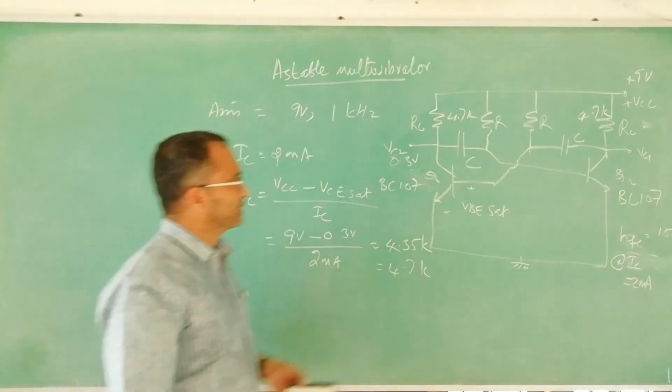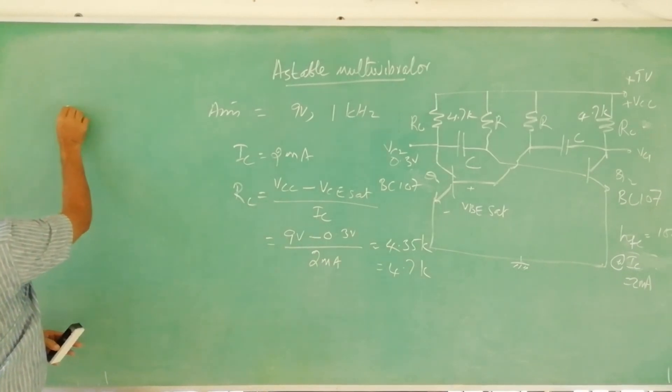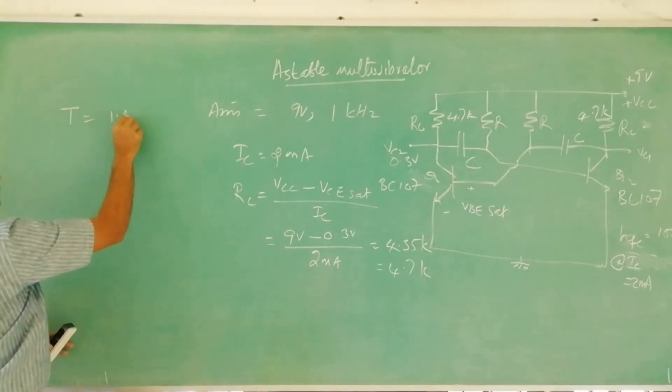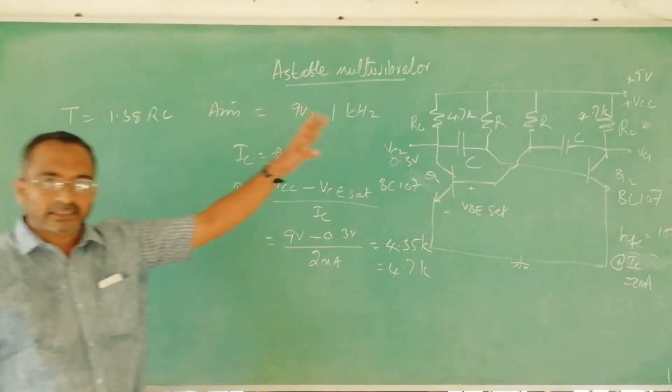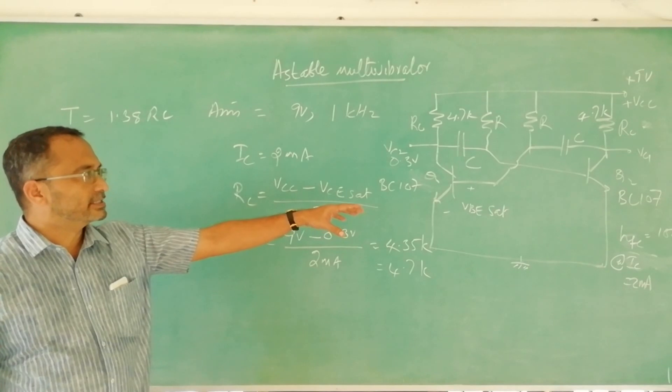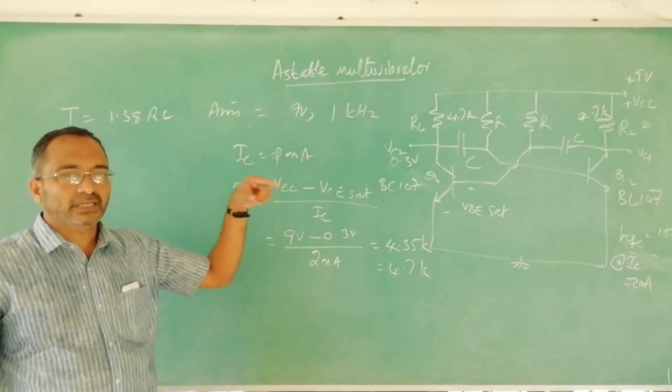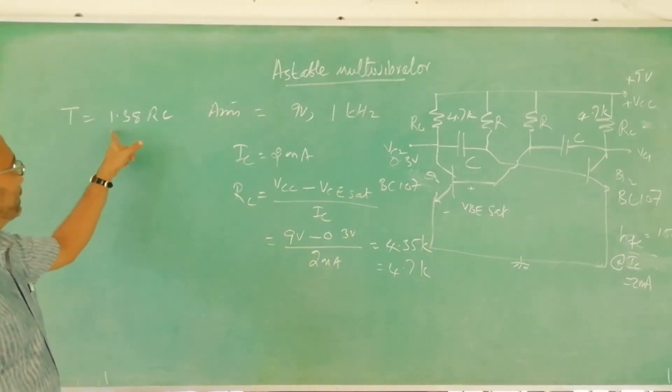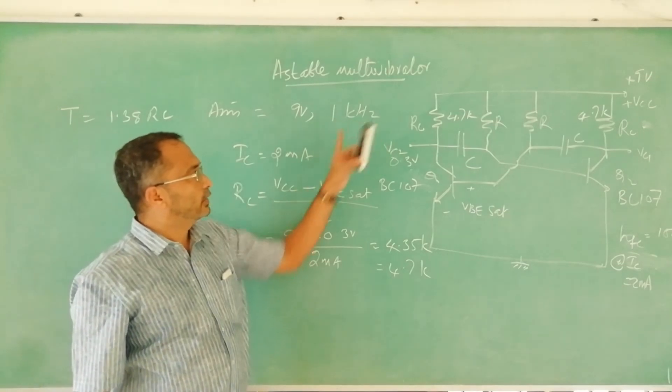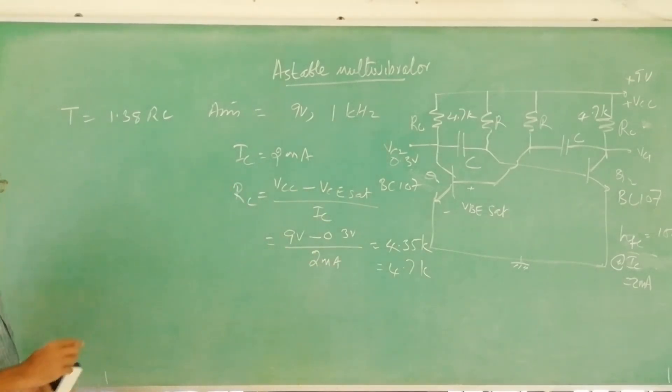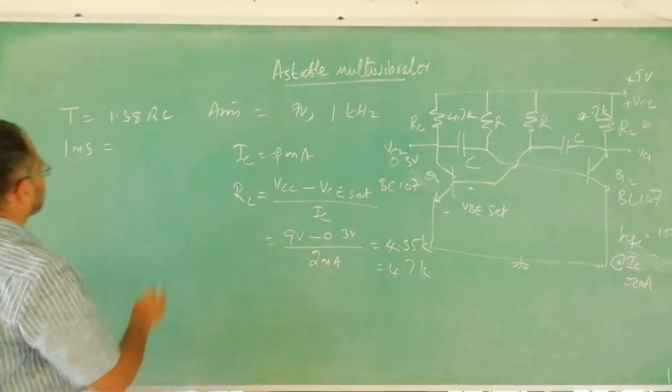Now what about R? We have the equation for the time period of the oscillation. T is equal to 1.38 RC. This is for astable multivibrator which generates a square wave with a duty cycle 1 by 2. If T is 1.38 RC, given frequency is 1 kilohertz, so T will be 1 millisecond. So 1 millisecond is 1.38 RC.